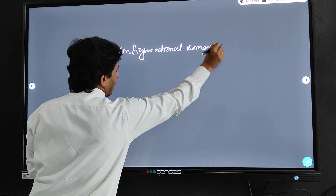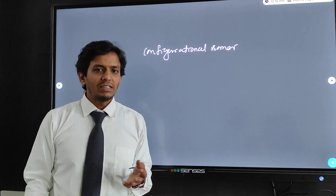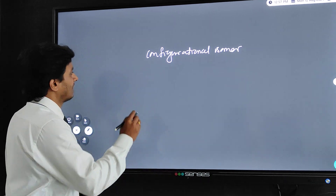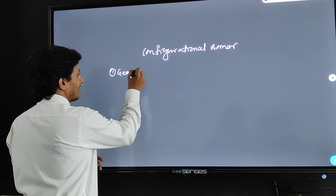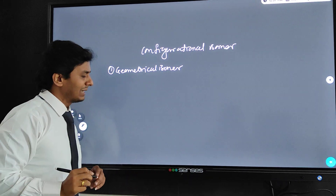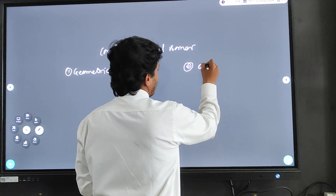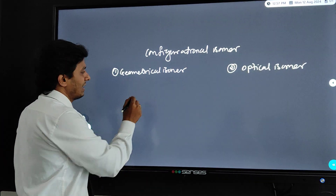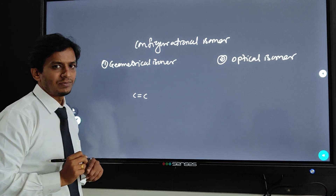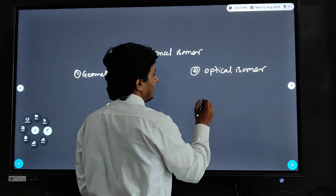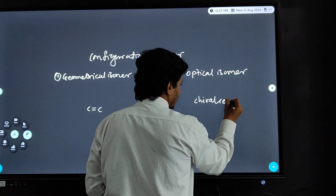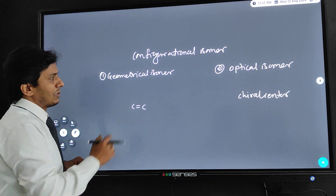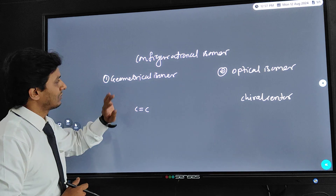Configurational isomers have a restriction for interconversion. These configurational isomers are further categorized into two main types: first is geometrical isomers, and second is optical isomers. Geometrical isomers mainly contain a carbon–carbon double bond, while optical isomers mainly consist of a chiral center. There is more focus on optical isomers in POC2, but geometrical isomers are also important.